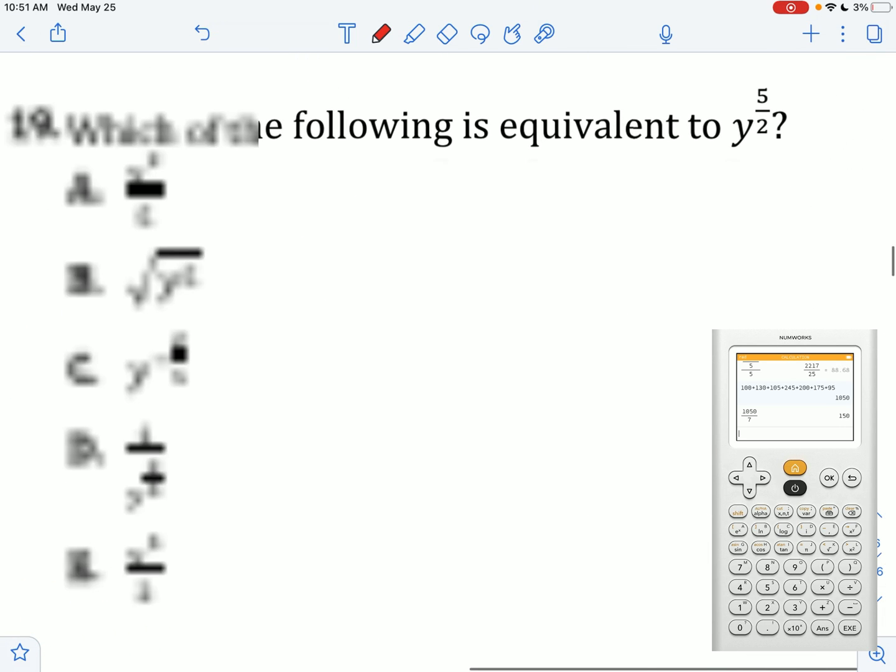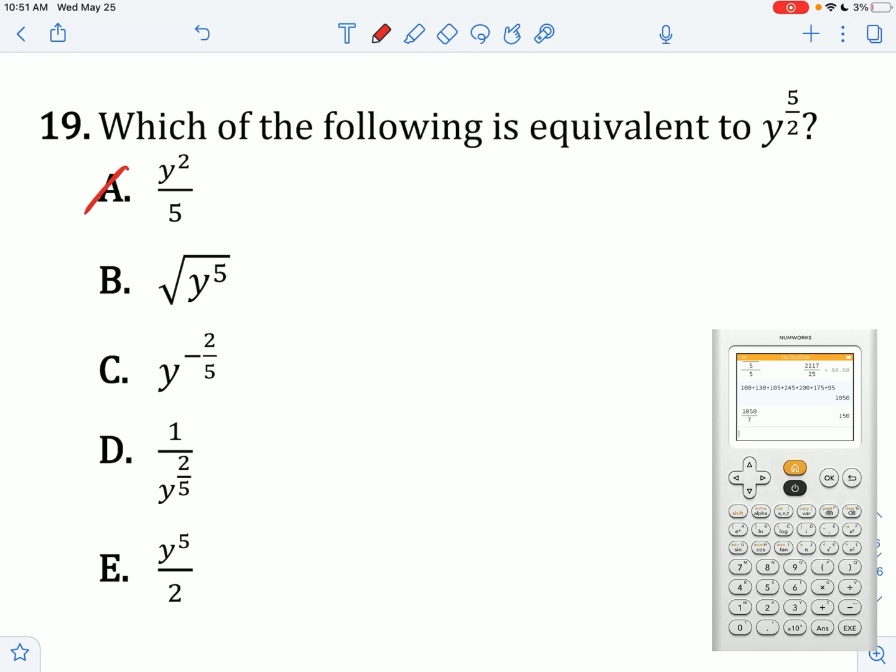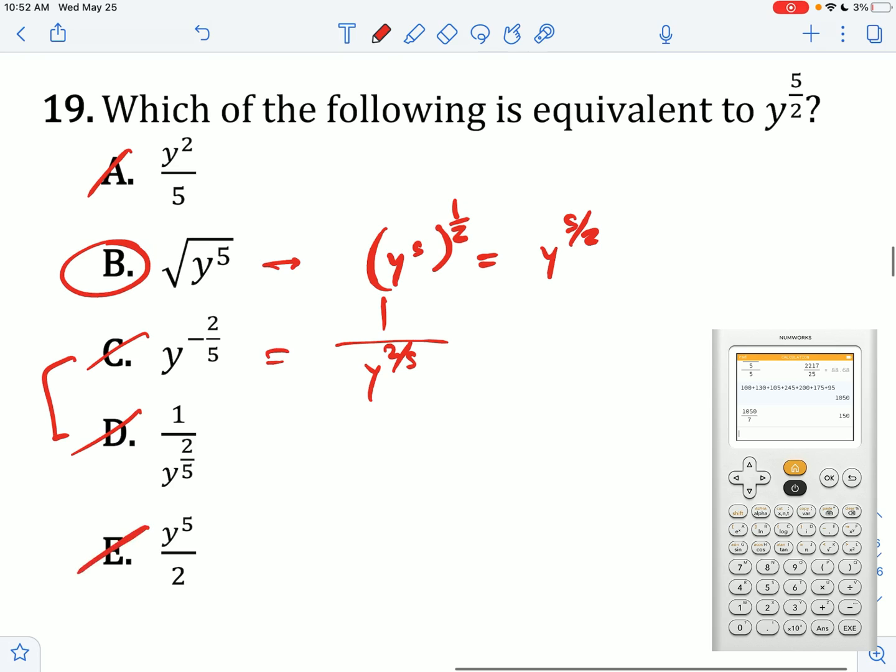Which of the following is equivalent to this? When you take the square root, it's the same thing as raising something to the half exponent. And we know that an exponent to an exponent is just when you multiply the exponents together. So this is the answer. This is actually equal to 1 over y to the 2 fifths. So that's wrong. This is the same thing as C. And this is wrong for the same reason as A.